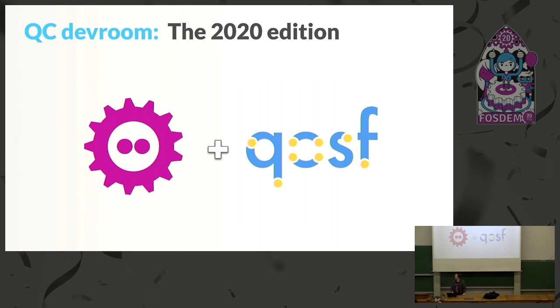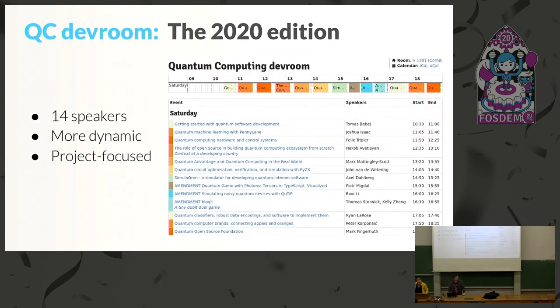So, this room is organized by the Quantum Open Source Foundation and we are happy to be at FOSDEM again. Last year was our first year being here and we really enjoyed it. We're really happy to be here again, this time in a bigger space. We're going to have 14 speakers today and we're trying to change the theme of the room a little bit this year. Last year we had a lot of speakers from the quantum computing industry talking about many different quantum computing libraries. This year we want to be more dynamic, so we're going to have shorter talks. The length of talks ranges from 35 minutes to 25 minutes. And we'll also be more project focused.